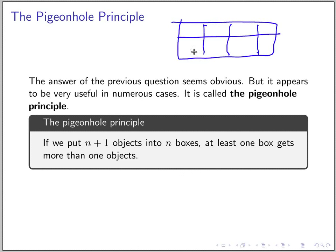If I put say nine pigeons in here, at least two must share the same hole. The pigeonhole principle says: if you put n plus one objects into n boxes, at least one box gets more than one object. This is quite obvious, and you can prove it.